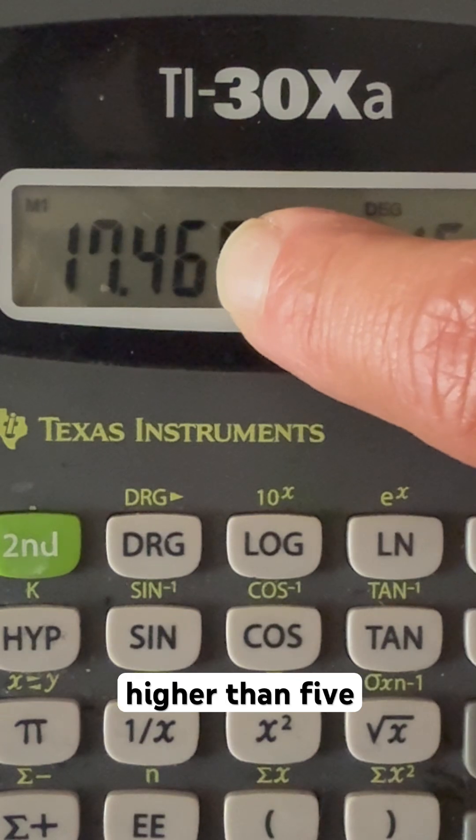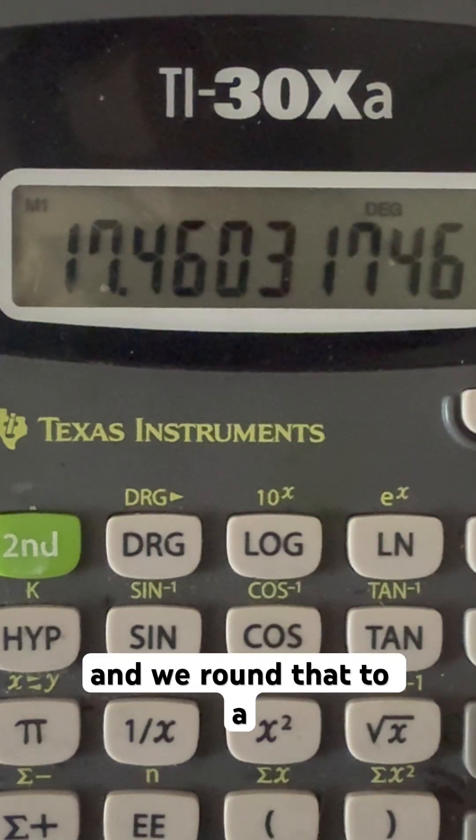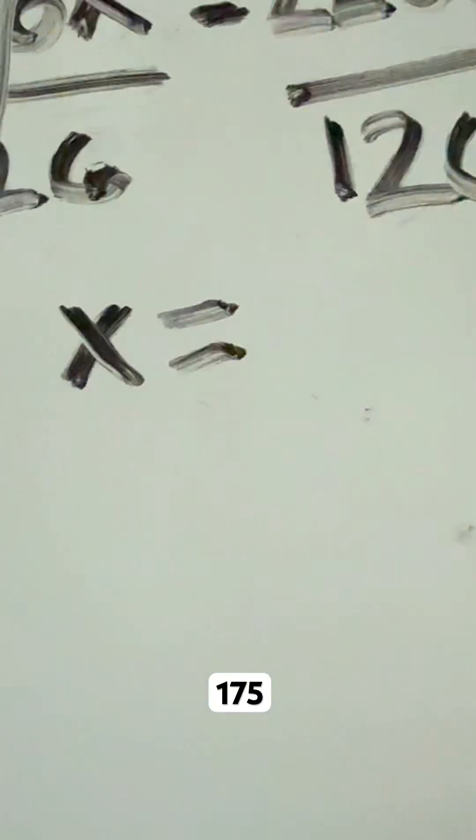Since it is a 6, it's higher than 5. So we would take that number and we'll round that to a 17.5. So my finalized answer here is 17.5%. And that would be my finalized answer.